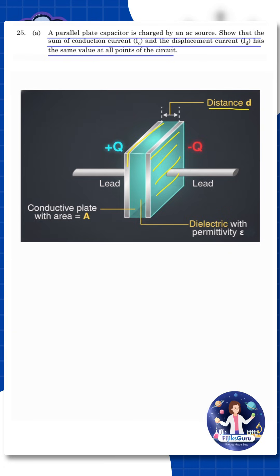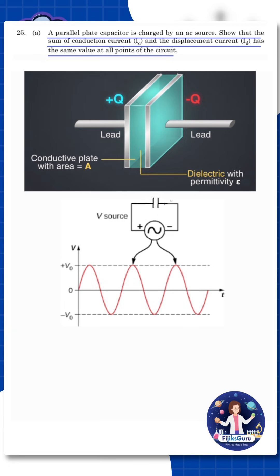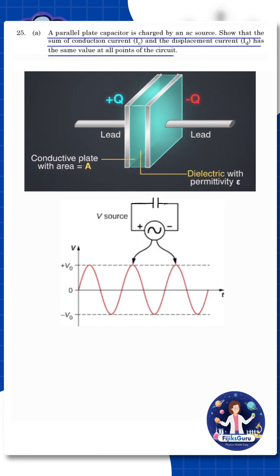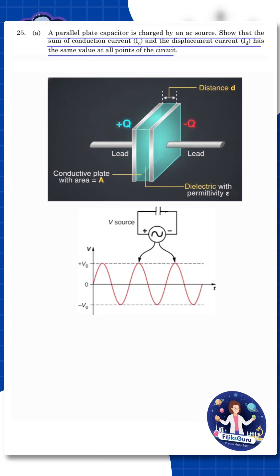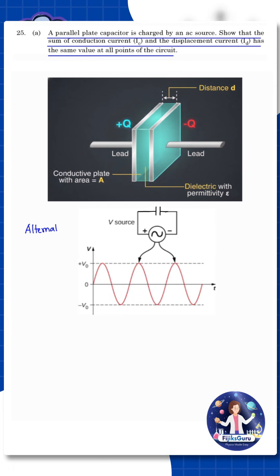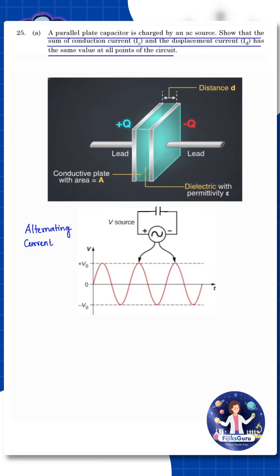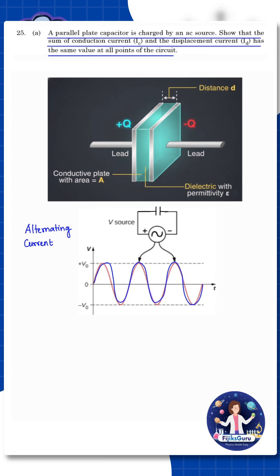There are two plates. This parallel plate capacitor is charged by an AC source. The AC source is the alternating current source. If you look at the AC source, it creates a sine wave — positive and negative. That is the alternating voltage.